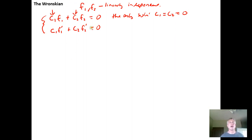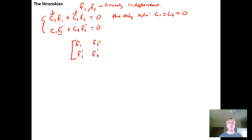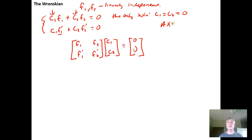If we set this up in coefficient matrix form from linear algebra, row 1 is f₁, f₂ and row 2 is f₁′, f₂′. By matrix multiplication, we multiply by the vector [c₁, c₂]ᵀ and set it equal to the zero vector [0, 0]ᵀ. This puts it in the Ax = b form we worked with frequently, and we can verify by matrix multiplication that we recover the two equations.